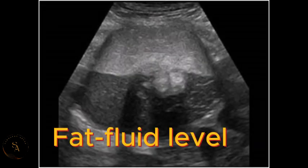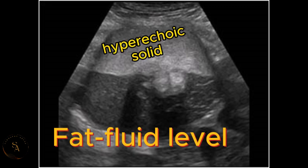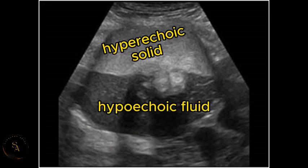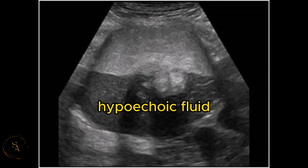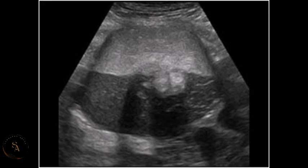The fourth sonographic feature is the fat-fluid level. This is described as a hyperechoic solid floating in a hypoechoic fluid, where the hyperechoic solid represents fat. The sebaceous material, which is one of the components of a dermoid cyst, contains mainly triglycerides. At body temperature this material is liquid, while at room temperature it becomes solid, producing the fat-fluid level appearance. Note that this feature is not unique to dermoid cysts; however, the presence of a dermoid block helps differentiate it from other lesions.